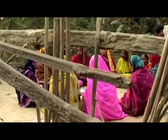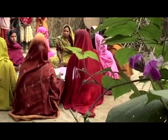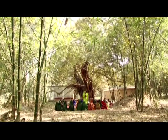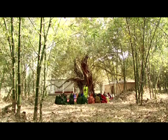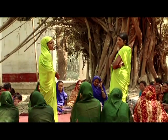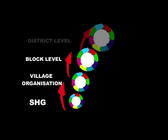Aajeevika envisages not only organizing poor women into various SHGs, but also combining various SHGs operating in a village into a village organization. Organizations at different levels can progress along the pyramid of the administrative hierarchy from the village to the block level to the district level.